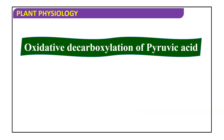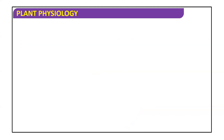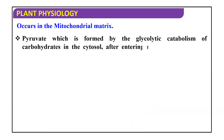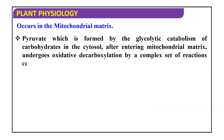Now, oxidative decarboxylation of pyruvic acid. It occurs in the mitochondrial matrix. Pyruvate, which is formed by the glycolytic catabolism of carbohydrates in the cytosol — that is the cytoplasm — after entering the mitochondrial matrix undergoes oxidative decarboxylation by a complex set of reactions catalyzed by pyruvic dehydrogenase.